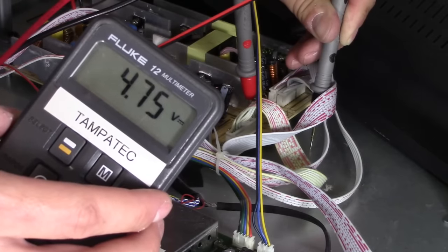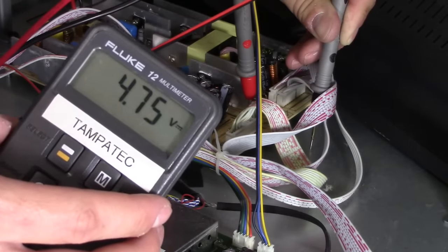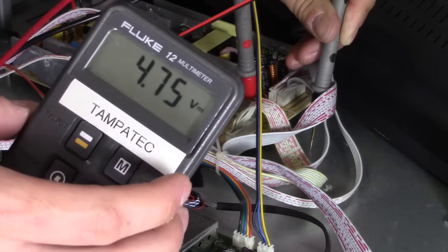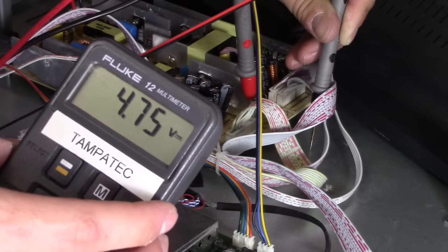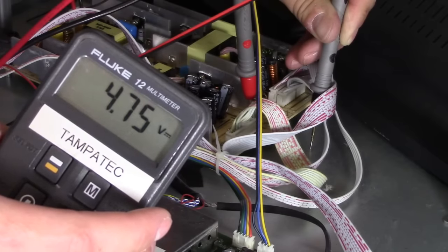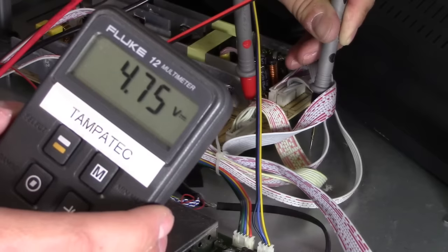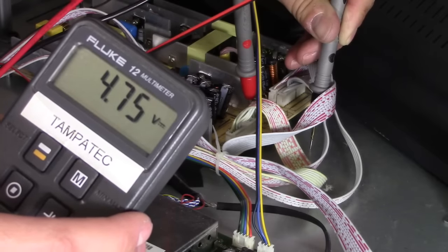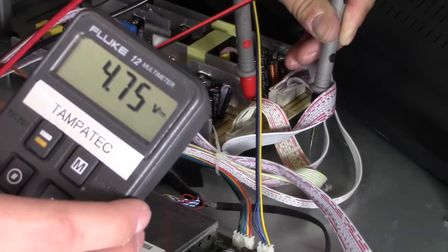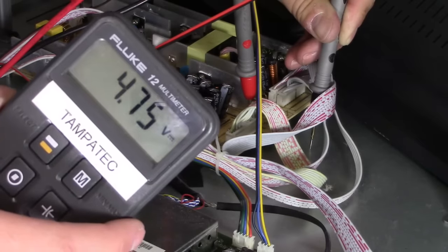But if it's 4.75, then I would definitely check the parts on the TV power supply board. Now, if the voltage is going up and down, 0 volts to 5 volts, then check the voltage regulator or the capacitors on the power supply board.